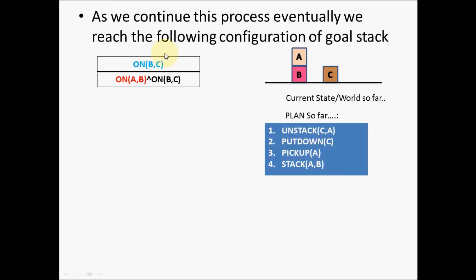At this particular stage of goal stack planning, the topmost element in the stack is the predicate on(B,C). This is the current state of the world so far, and the plan generated so far has four actions. For the goal stack to become empty, both predicates together must be satisfied. Only when the goal stack becomes empty will you reach the goal state and the plan will be finalized.